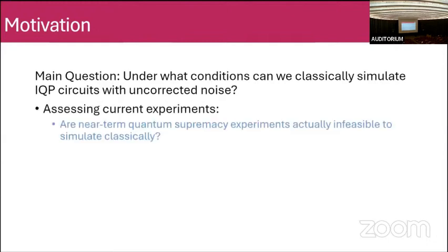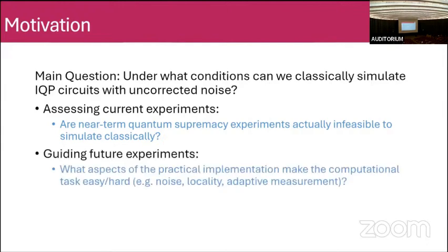The motivation is twofold. First, it lets you assess near-term quantum experiments — it tells you whether these circuits are actually infeasible to classically simulate. If someone claims a quantum supremacy experiment, you can try to spoof it. More interestingly, it guides future experiments. If you develop good classical simulation algorithms that take advantage of different aspects of the circuit, this tells you what aspects of the practical implementation make it easy or hard, and hopefully guides how you implement it.